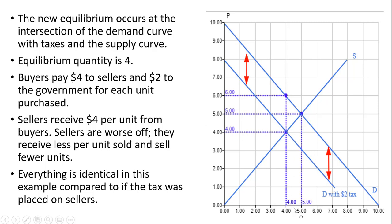The equilibrium quantity, like before, is still 4 units. Buyers are going to pay $4 to sellers and $2 to the government for each unit purchased. When all is said and done, buyers are still paying $6 — just like in the case where the $2 per unit tax was placed on sellers. Sellers receive $4 per unit from buyers and don't have to pay the tax themselves. Sellers are still worse off: they receive less per unit and sell fewer units. The big story is that everything is identical compared to if the tax was placed on sellers.